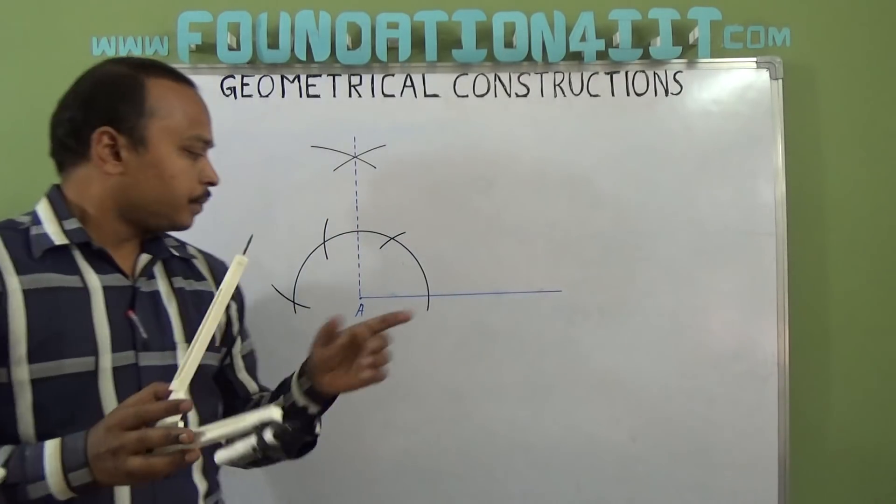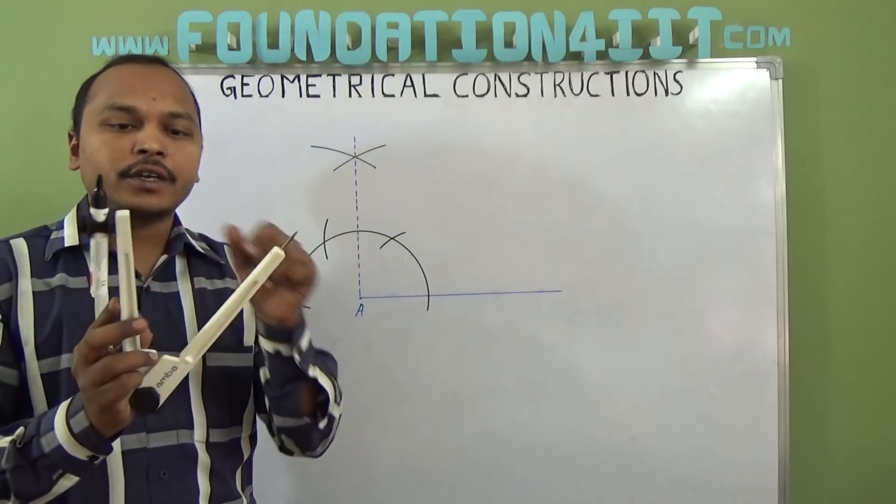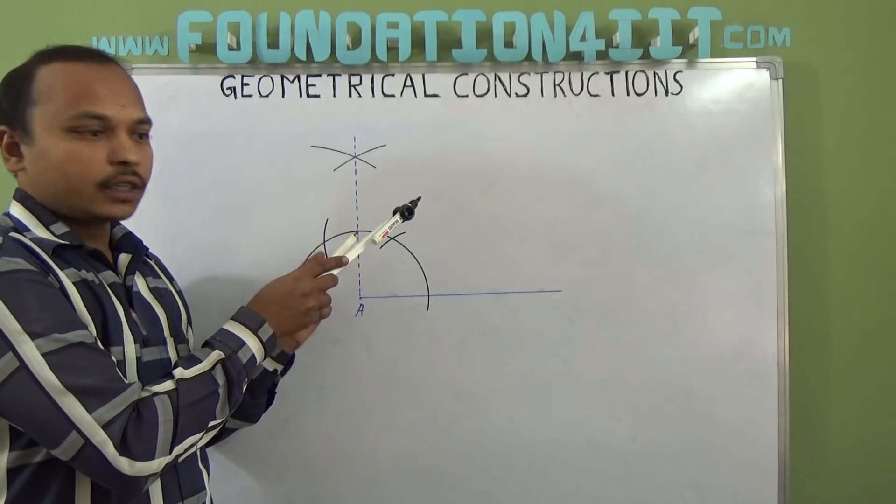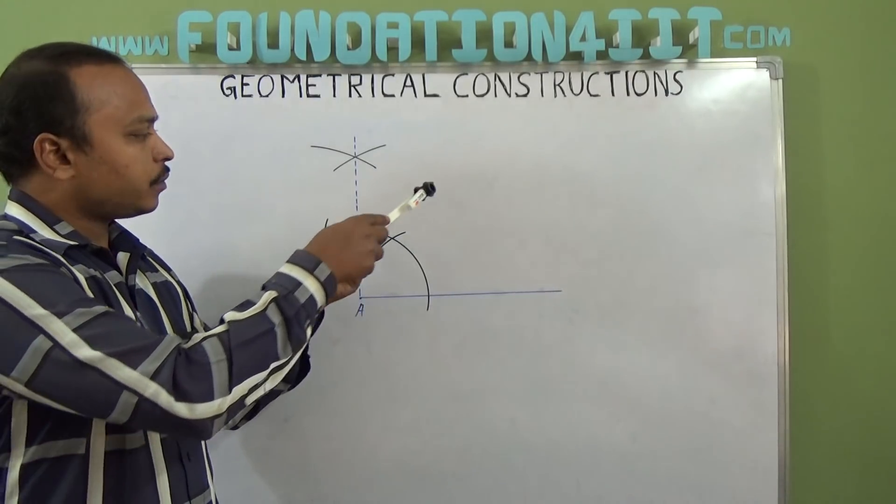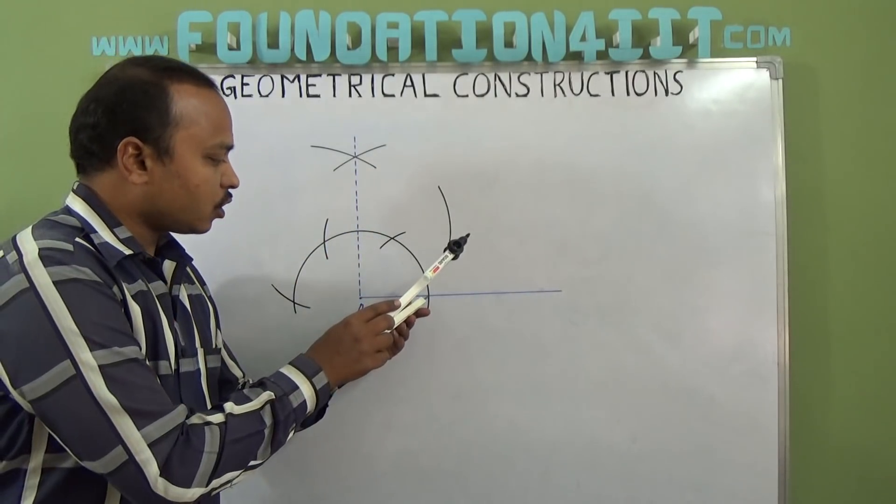But we need 45 degrees, right? Now from 0 and 90, take a fixed radius. From the 90 degrees dot, draw an arc. Without changing this, from the 0 also